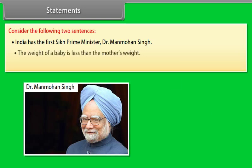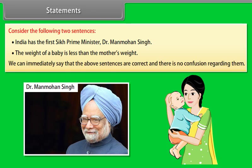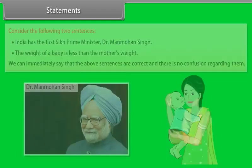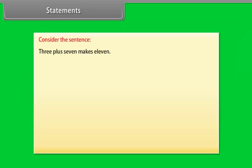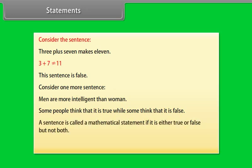The weight of a baby is less than the mother's weight. We can immediately say that the above sentences are correct and there is no confusion regarding them. Consider the sentence: 3 plus 7 makes 11 — this sentence is false. Consider: Men are more intelligent than women — some people think it is true, while some think it is false. A sentence is called a mathematical statement if it is either true or false, but not both.